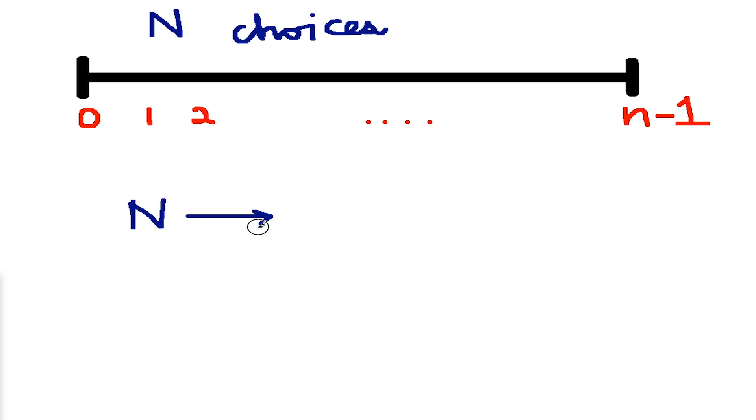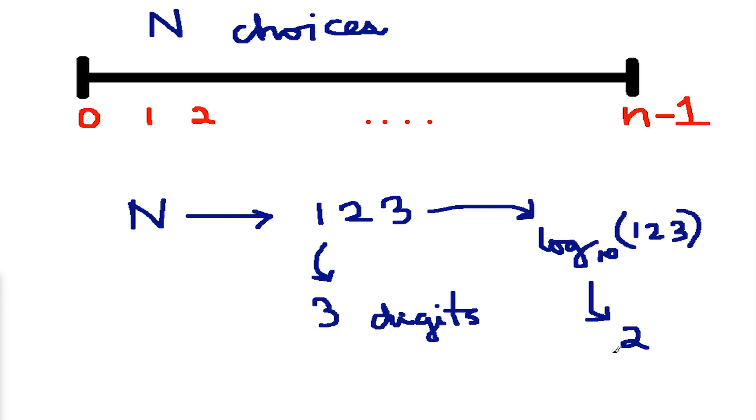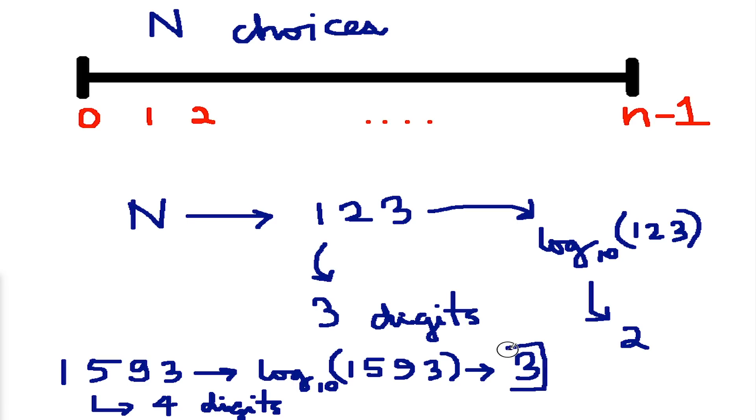Okay, let's take n equal to 1, 2, 3. This takes three digits to represent and incidentally the log of 123 to the base 10 is 2. Taking another number 1593, we see that it is 4 digits long and the log of this number again to the base 10 is equal to 3. Now we can recognize a pattern over here. The log of any number plus 1 gives us the minimum number of digits required to correctly express that number. So the minimum time required to even say a number is log n.